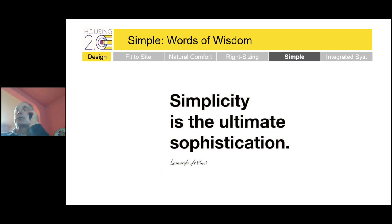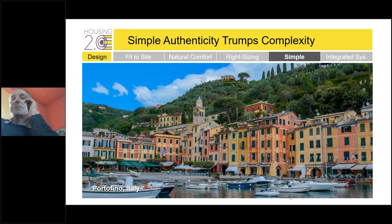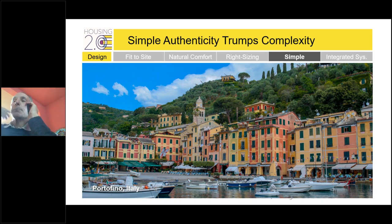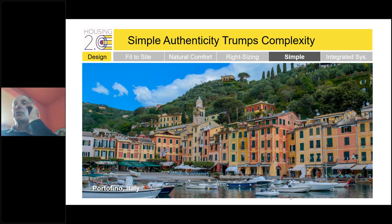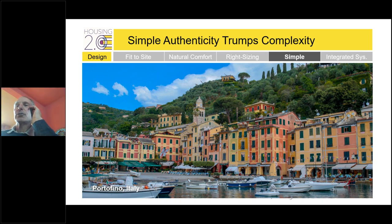Next is Simple. Leonardo da Vinci said it: simplicity is the ultimate sophistication. You see it in Europe all the time — Portofino, Italy, for example. European architecture seems impressive because it's so innate and complex, but it's actually just the opposite. These are flat walls, and what makes the buildings, streets, and architecture exciting is rhythm, texture, color, trim, and indoor-outdoor living. Simple is a unique approach to saving cost and delivering a better experience.